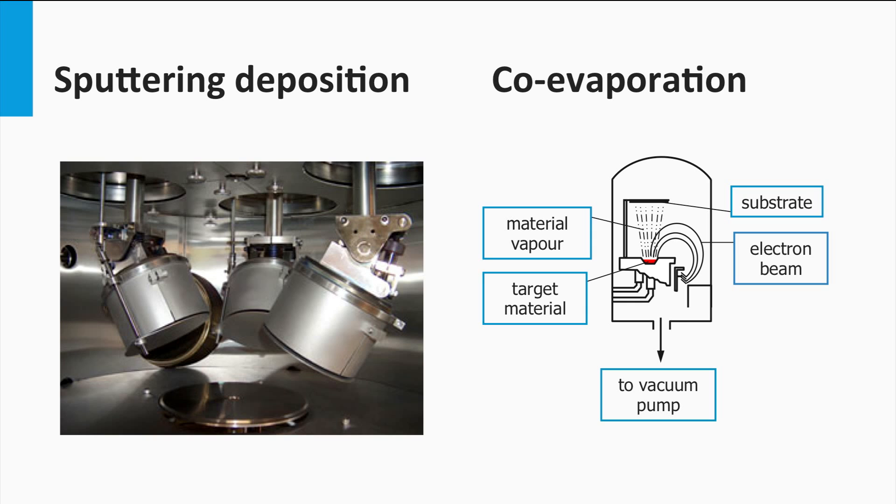Two approaches can be used. First is the sputtering and co-evaporation on the substrate at high temperatures. During the process there is an additional selenium source. During deposition, a CIGS film is formed.